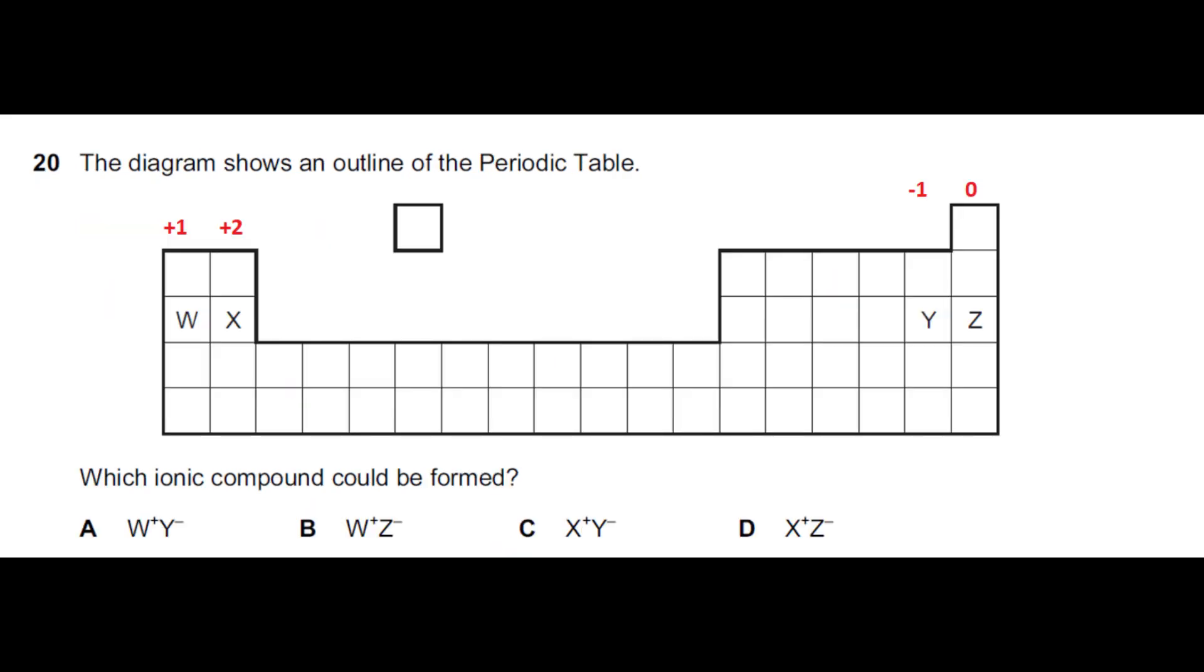In the next question there is an outline of the periodic table given and the question is which ionic compounds could be formed. As I have already explained, ionic compounds are formed between metals and non-metals. We have Z element in a noble group which are the zero group elements, so they do not have any tendency to react. Among the metals we are given elements in group 1 and 2. Group 1 have a valency of plus 1, group 2 have a valency of plus 2.